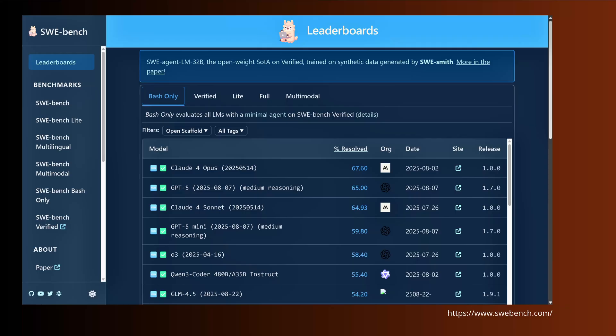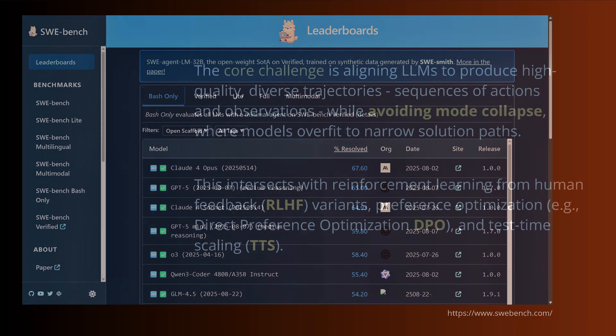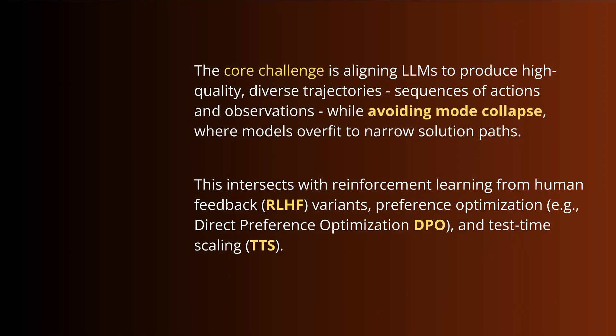Now SVE bench - you see here for batch only with a minimal agent configuration, those are the performance data. There is a challenge here to avoid the mode collapse where the models overfit to only very narrow solution paths. This is particular if you have a configuration where we have reinforcement learning by human feedback, direct preference optimization, and test time scaling.